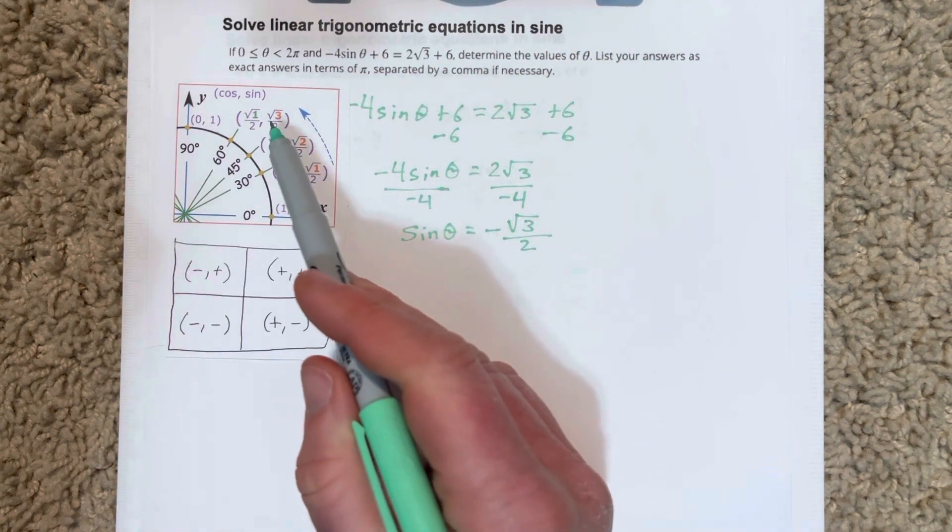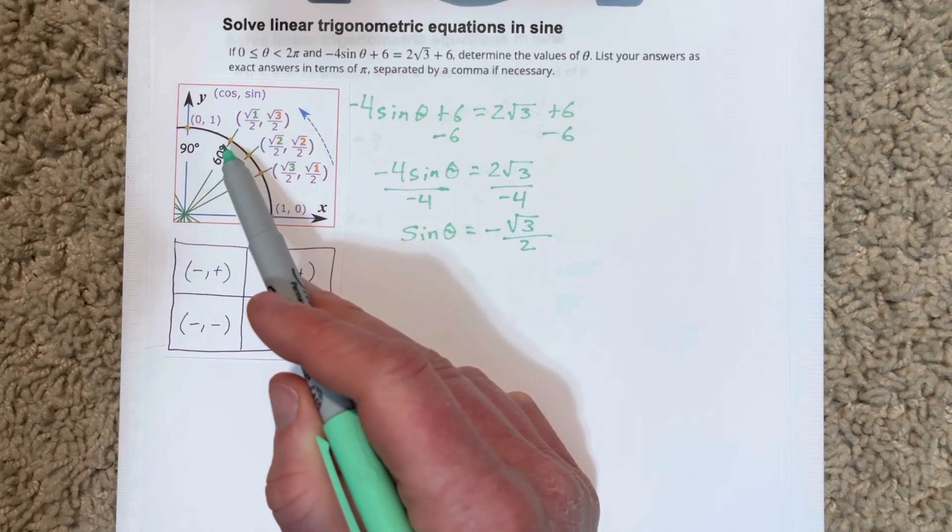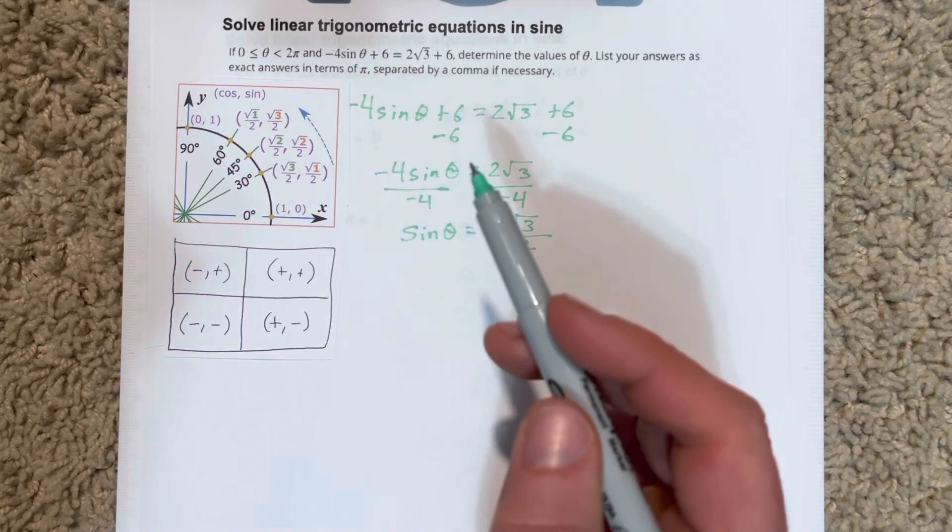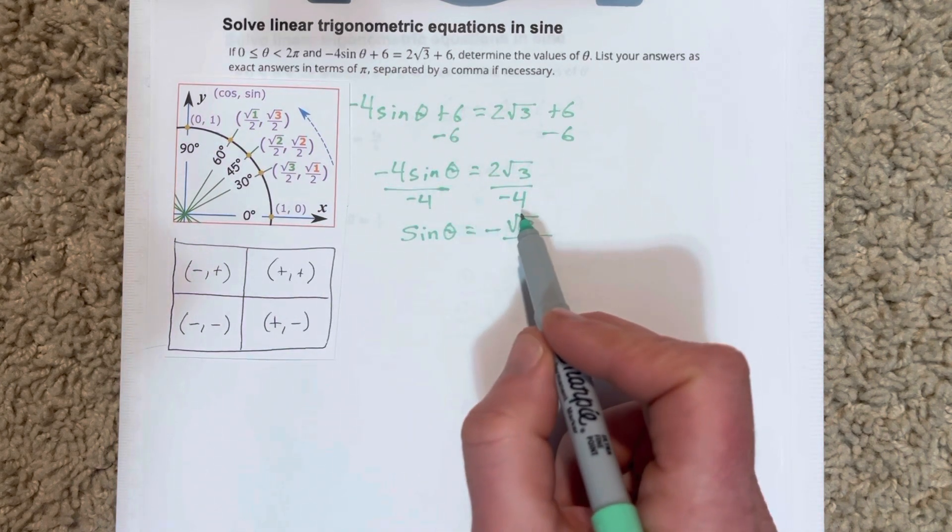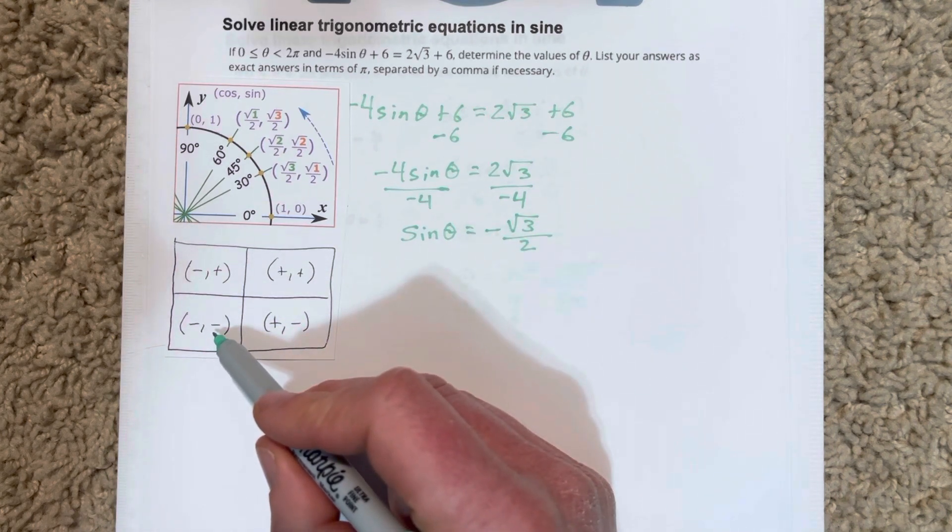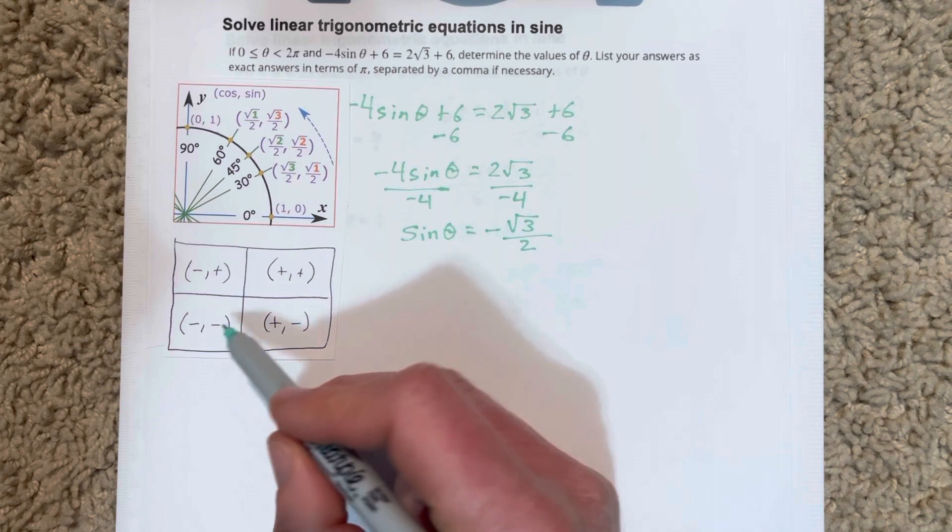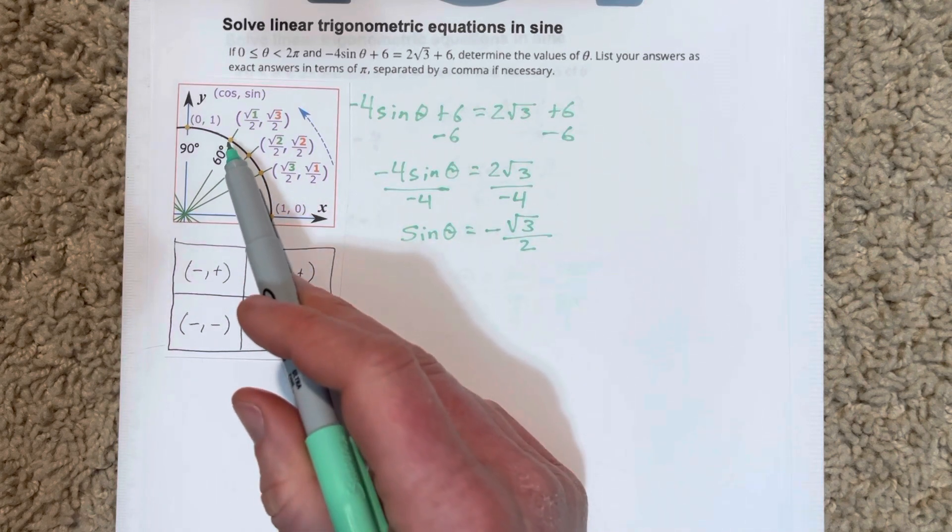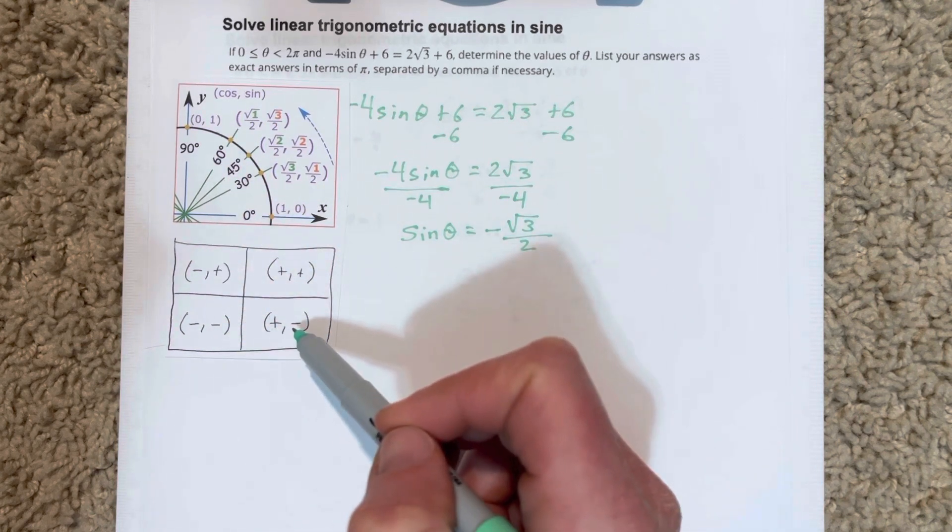Sine is √3/2 at 60 degrees. But we're talking about -√3/2. So sine is negative in quadrants 3 and 4. We want to find the 60 degree angle in quadrant 3 and the 60 degree angle in quadrant 4.